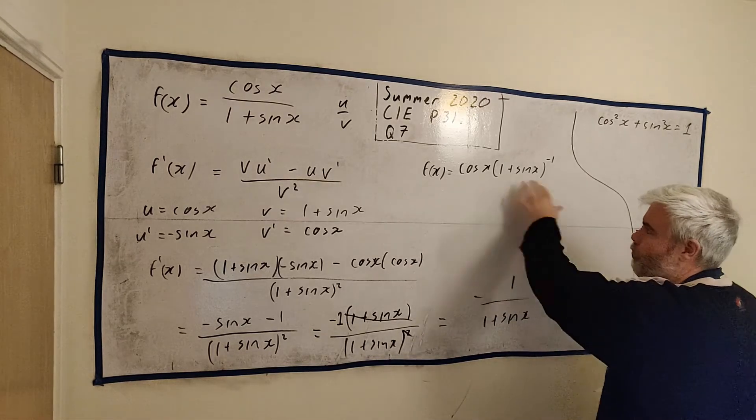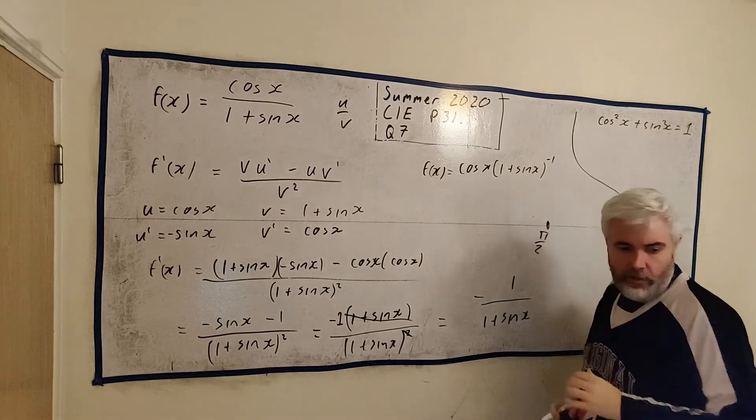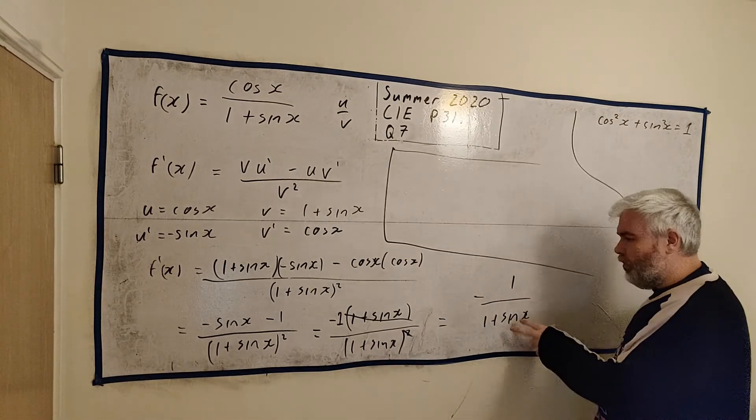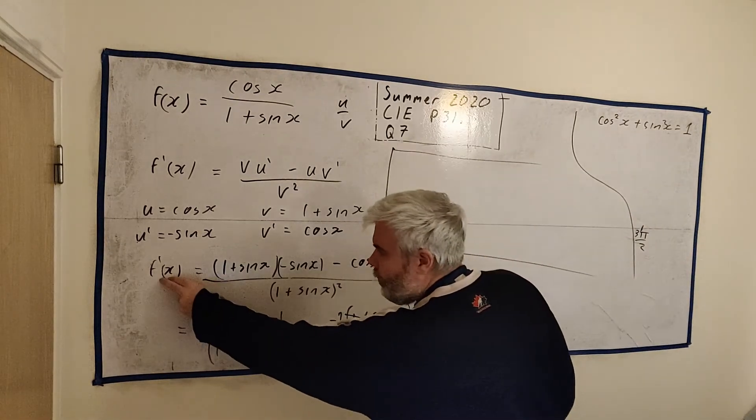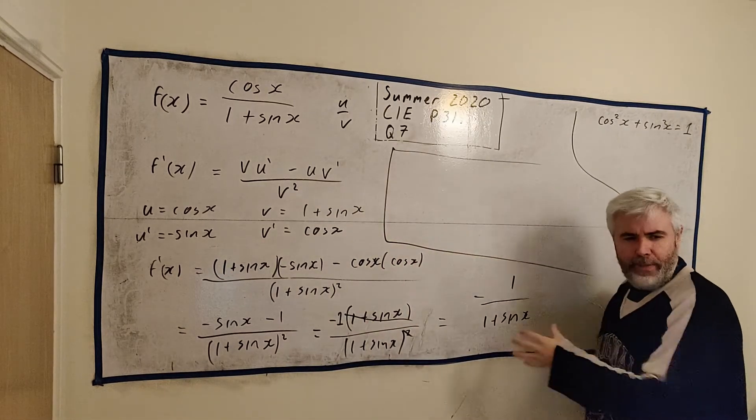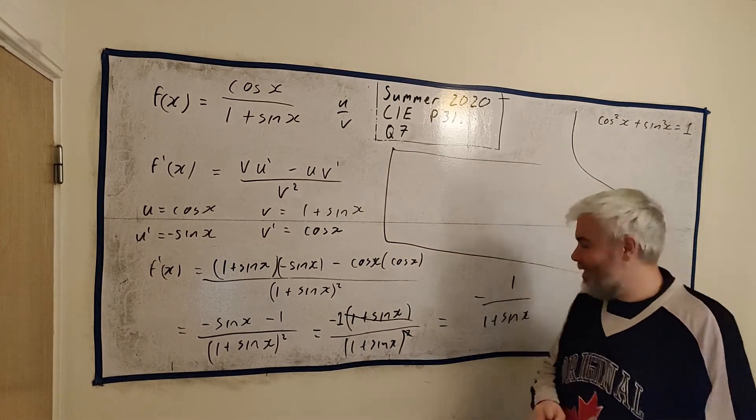Let me rewrite this top row to be -(1 + sin(x)). Hopefully you recognize that's the same. I took a minus out of this. I took a minus out of that. Over (1 + sin(x)). But look, this is the same as the bottom row.